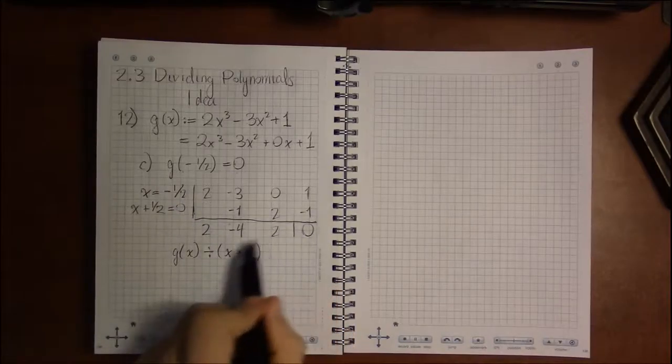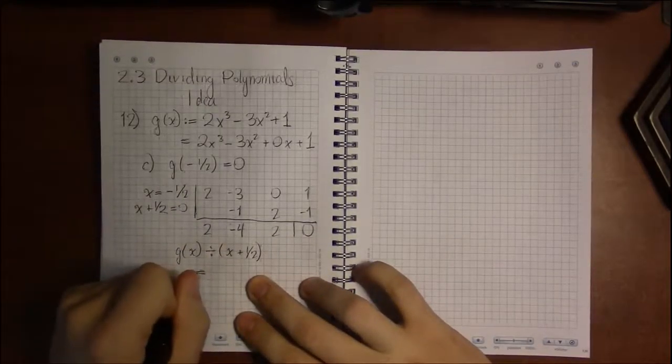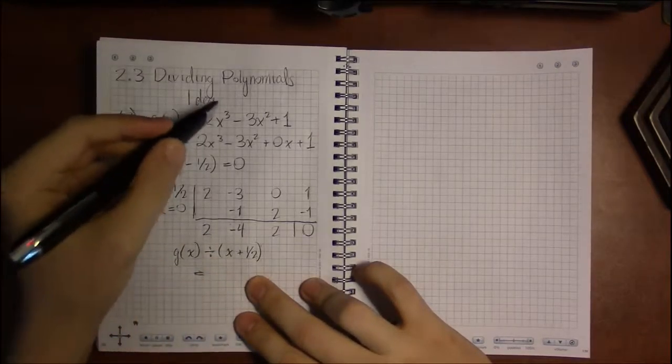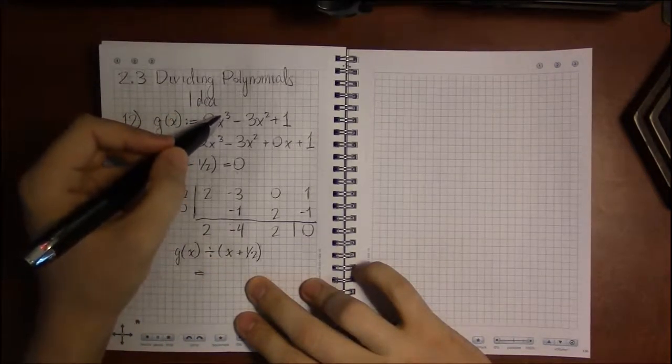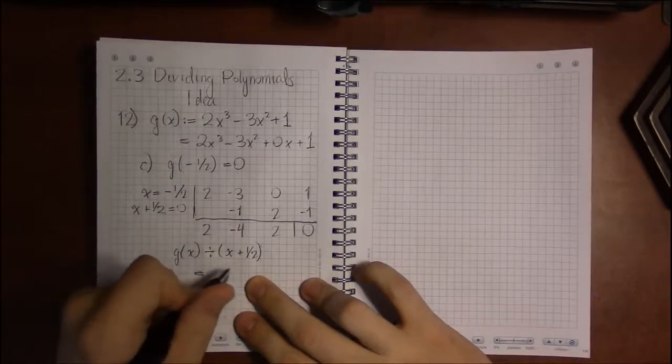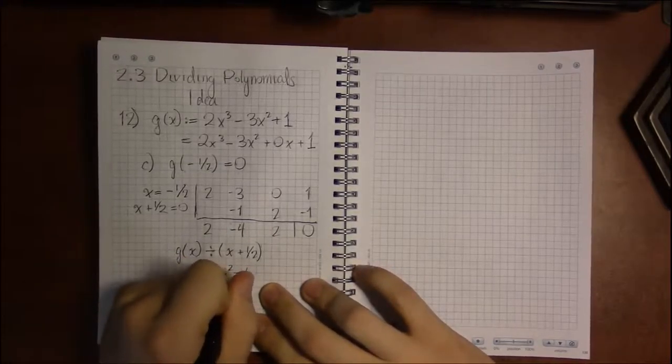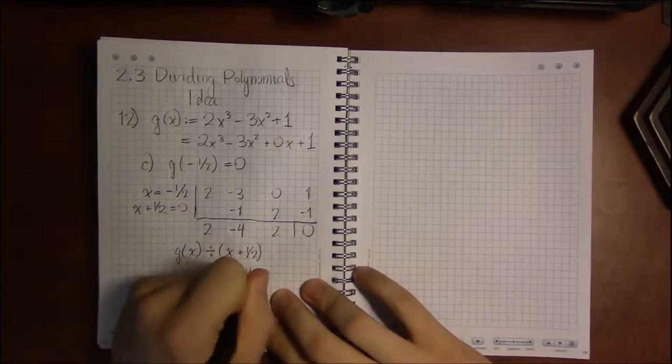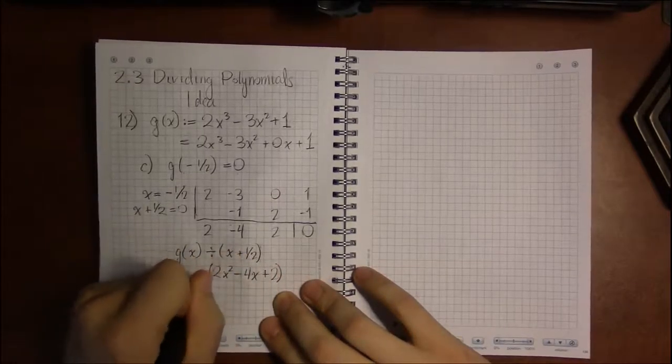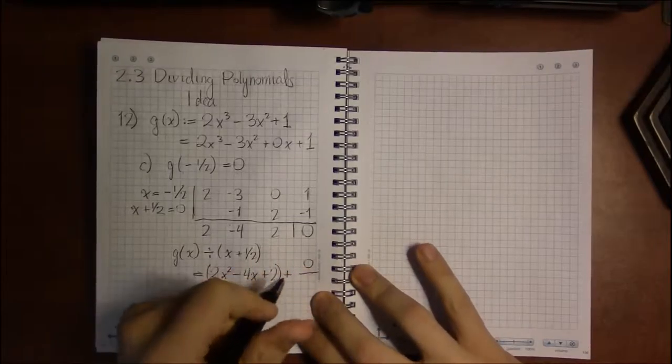But then when we walk through the synthetic division, we now have a quotient and a remainder. We now have the quotient. So originally we started with a cubic x cubed. This is going to be x squared. So it's going to be 2x² minus 4x plus 2, and there's going to be no remainder. The remainder is 0.